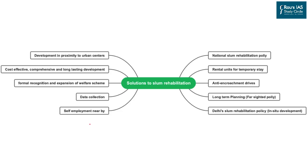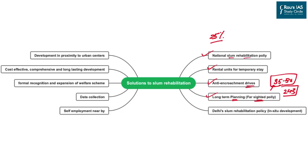Because of this, the following initiatives are required as early as possible. We need a national slum rehabilitation policy followed by slum rehabilitation policies in each state where the urban population is over 25%. We also require rental units for temporary stay for urban poor, especially migrant labourers. Every municipal body should conduct anti-encroachment drives every month to remove settlements before they become too densely populated. Long-term, far-sighted planning — a plan covering at least 35 to 50 years — should be developed at the municipal level, as provided in the Constitution under Article 243, which empowers urban local bodies to create such committees.